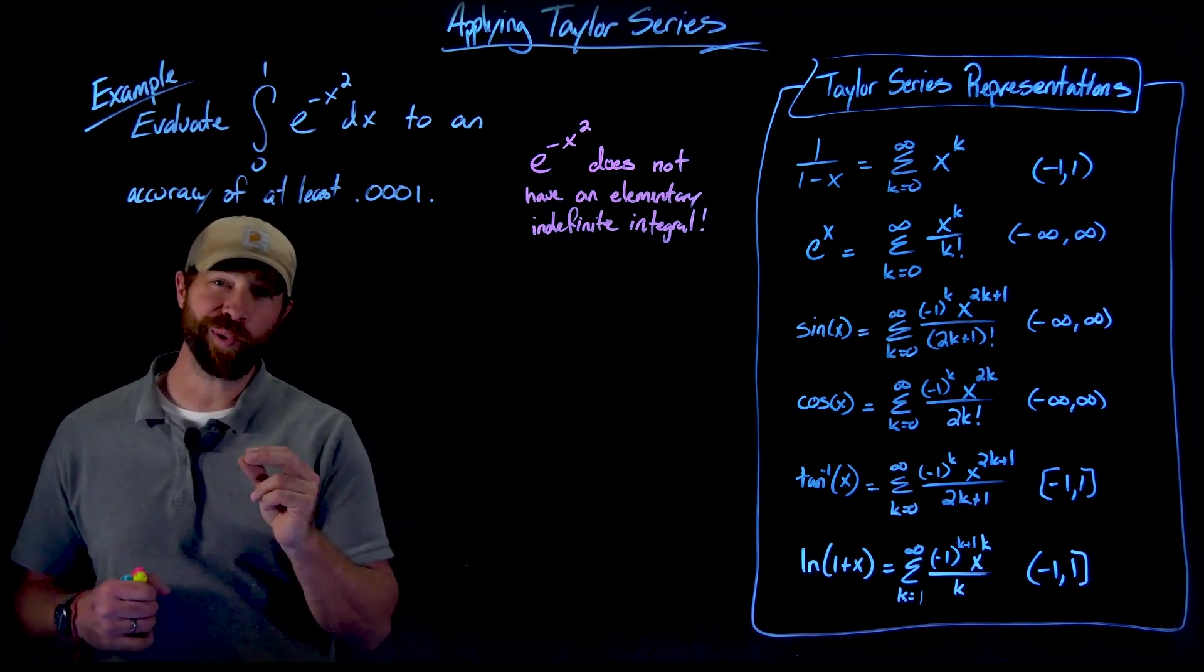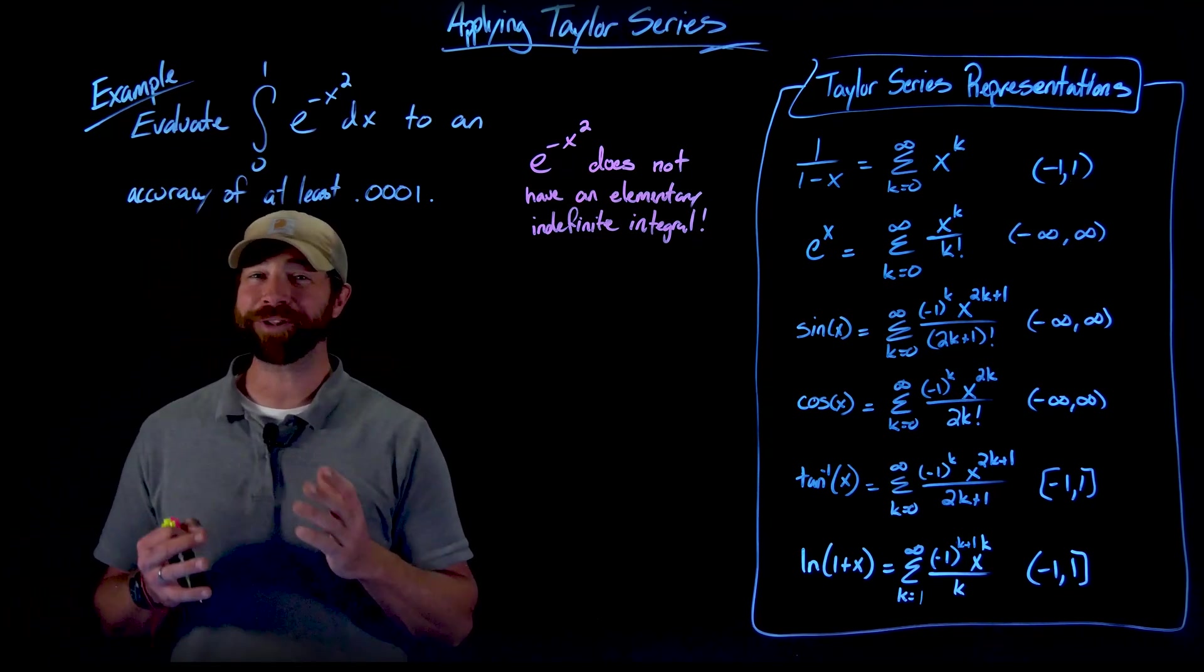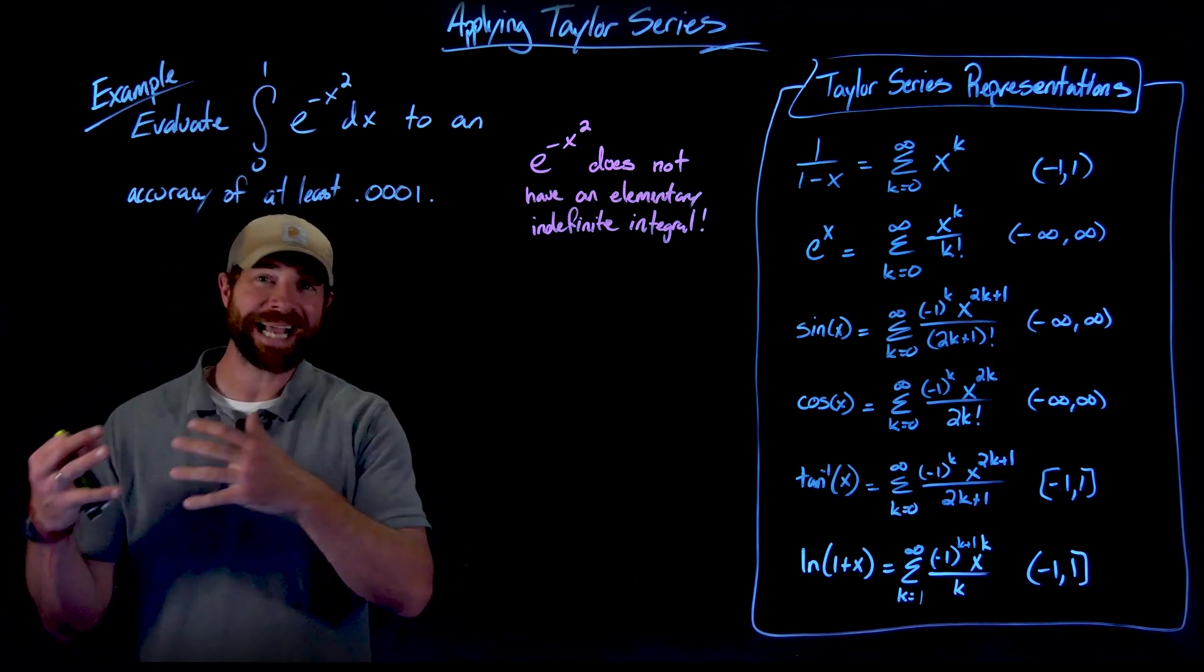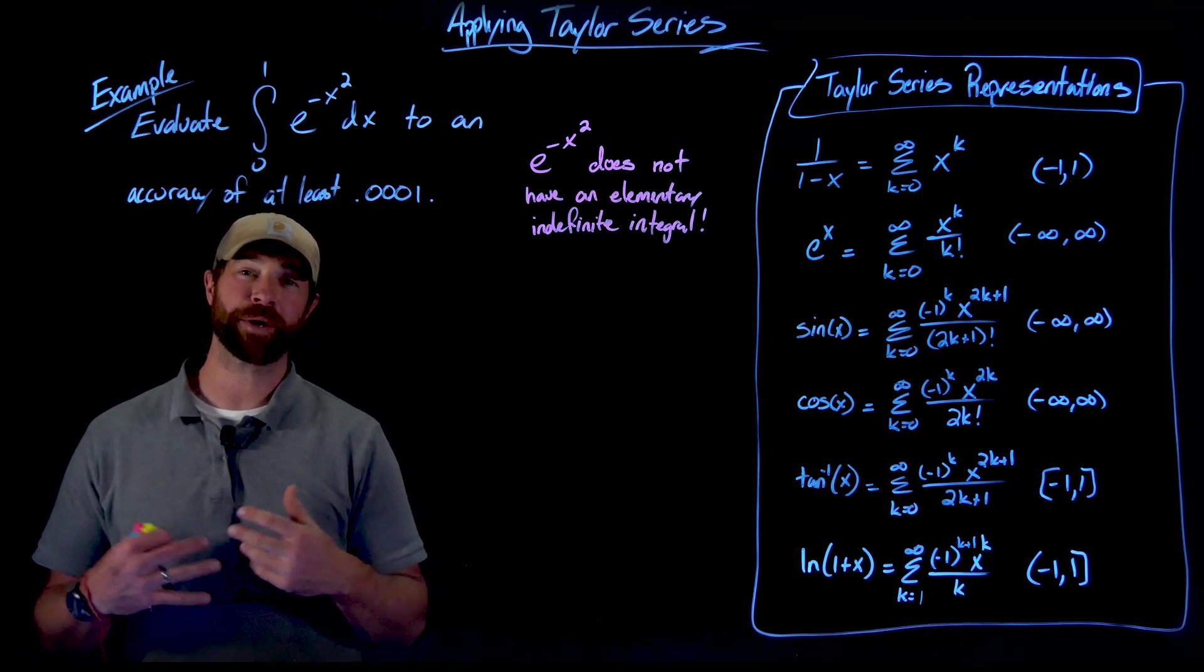And second, importantly, is that e to the negative x squared does not have an elementary indefinite integral. And what that means is we can't actually write the antiderivative of e to the negative x squared using our functions that we have.